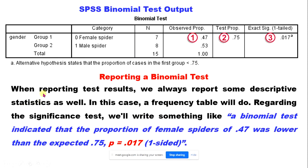When reporting the test result, we always report some descriptive statistics as well — in this case a frequency table. We write something like: a binomial test indicates that the proportion of female spiders of 0.47 (47%) was lower than the expected proportion of 75%.